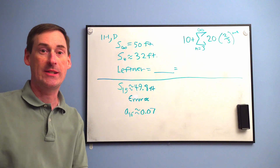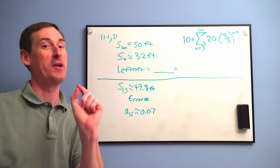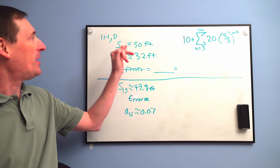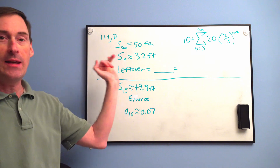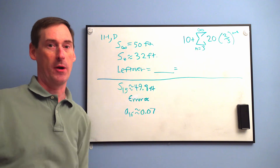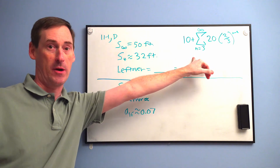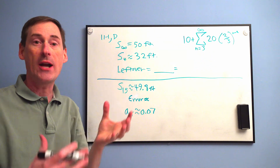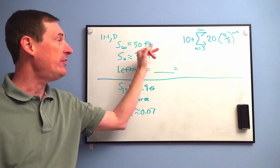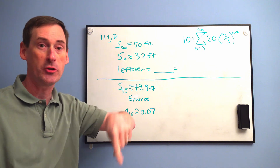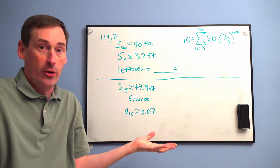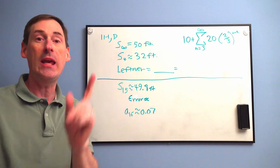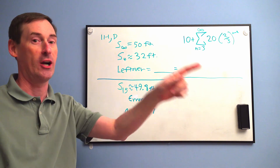BC students, this is 11-3. This is where we really start to step up our game. It's kind of fun though. First of all, in 11-1d, we had the basketball example — the bouncing basketball. It was this series right here. We had S sub infinity. We actually calculated it to be 50 feet total that the basketball travels due to gravity on Earth. It would be different on different planets, of course. We got 50 feet — that was the infinite sum.